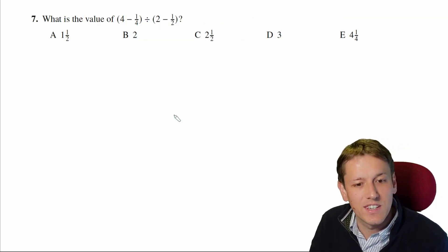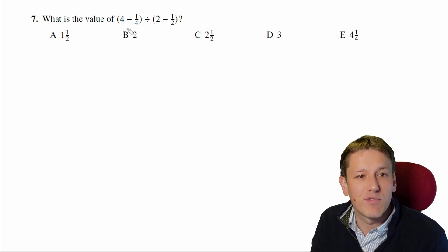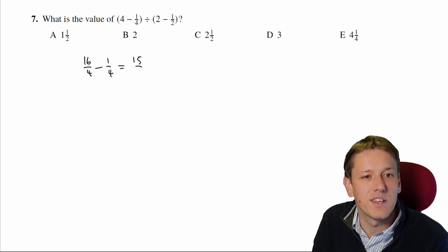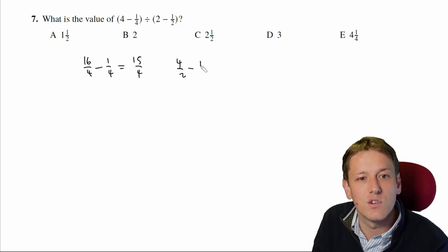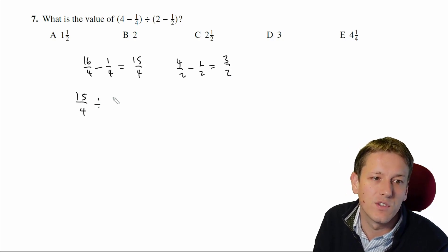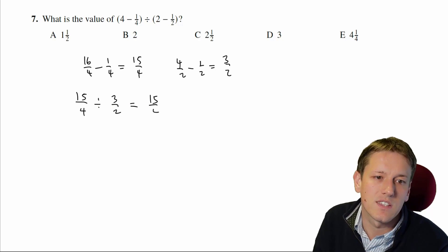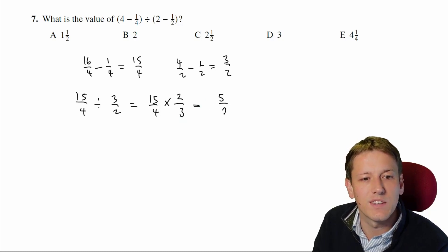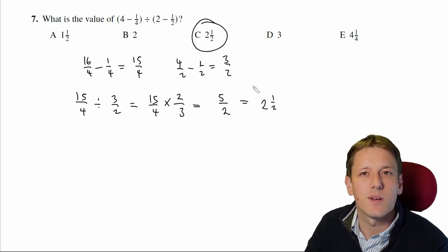No need to overcomplicate this one, we're just going to do the calculation. Improper fractions are the best for this sort of calculation, so 4 minus a quarter, that's 16 over 4, minus a quarter, that's 15 over 4, 2 minus a half, that's 4 over 2, minus 1 over 2, so that's 3 over 2. So I just need to do 15 over 4 divided by 3 over 2, that's the same as 15 over 4 times 2 thirds, and now if I cancel this down, 15 and 3 cancel to give 5, and the 2 and the 4 cancel to give 2, and 5 over 2 is 2 and a half, and so the answer is C.